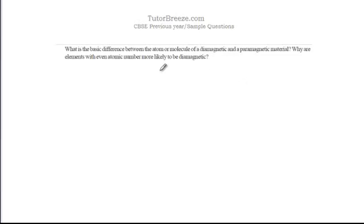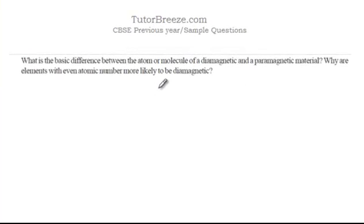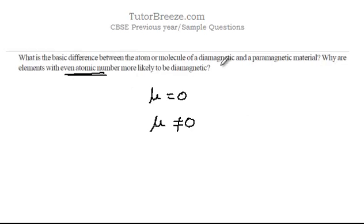In a diamagnetic material the net dipole moment μ is equal to zero, whereas in a paramagnetic material the net dipole moment is not equal to zero. The atoms have a small dipole moment which, as they are randomly oriented, cancel each other out in the absence of an external field. Let's now answer the second part of the question. It says that elements with even atomic number are more likely to be diamagnetic.